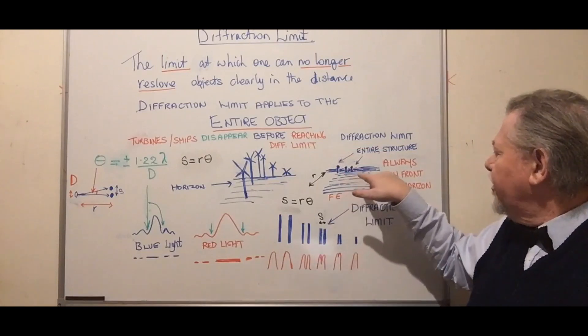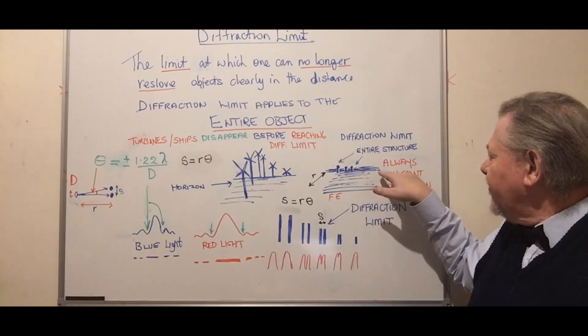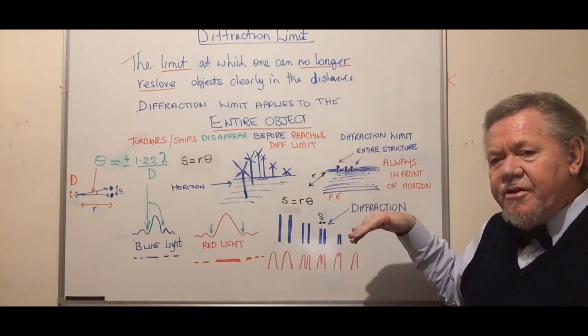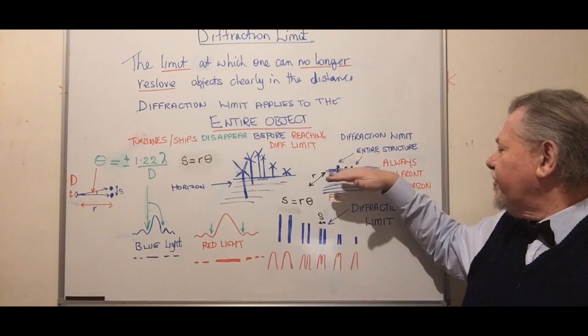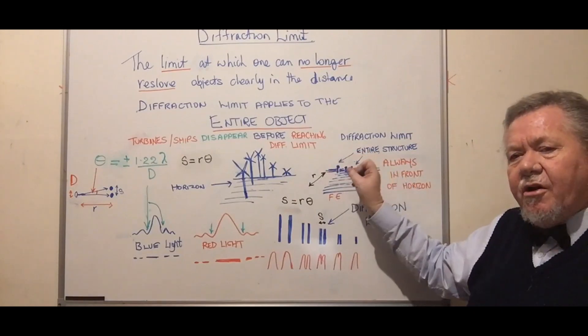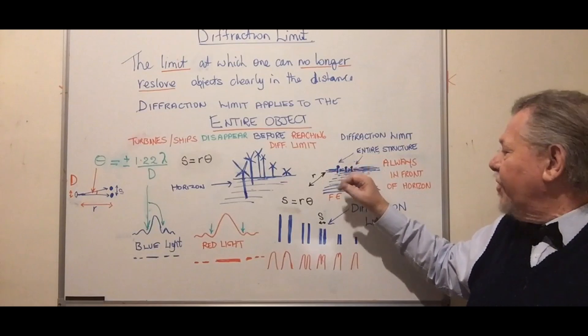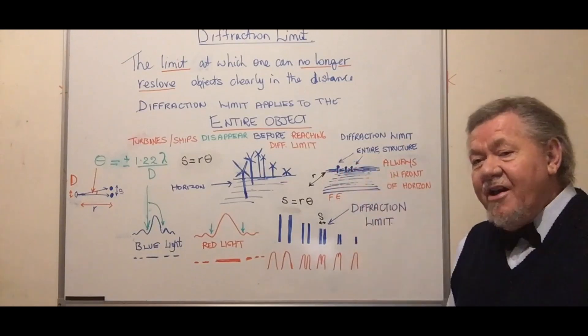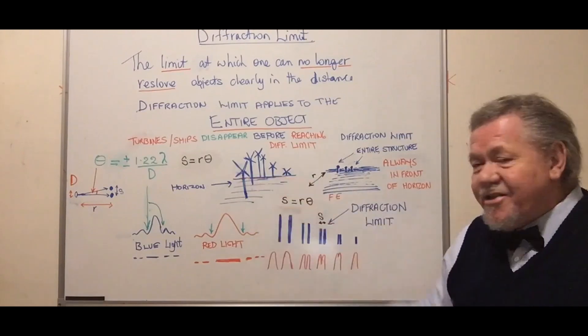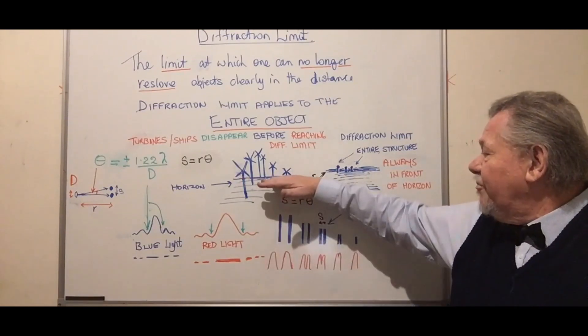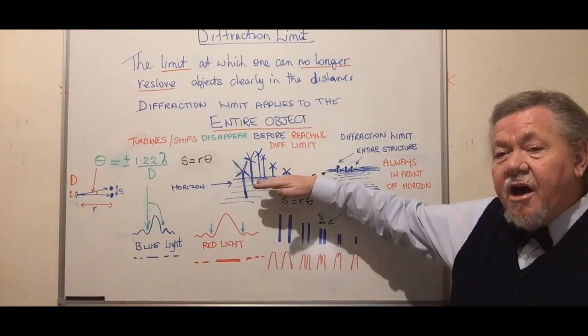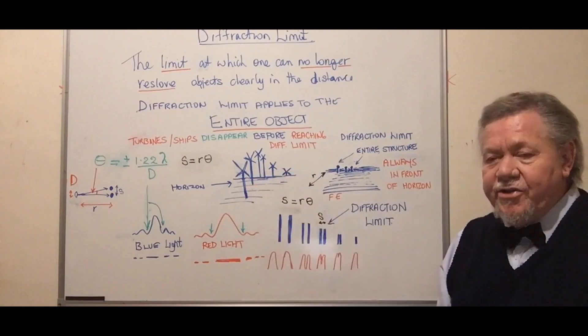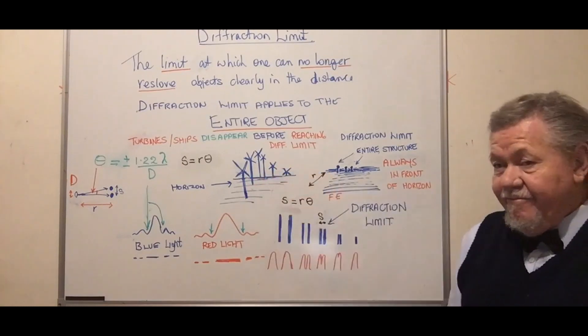The other thing is, the horizon would be beyond these objects. The diffraction limit would have them so close together you practically can't tell what they are, but beyond that the horizon would keep going. That's not what happens. We have an abrupt horizon and the wind turbines behind it are still very clear, and you cannot see the horizon continuing beyond.